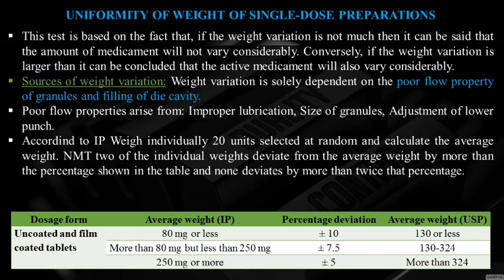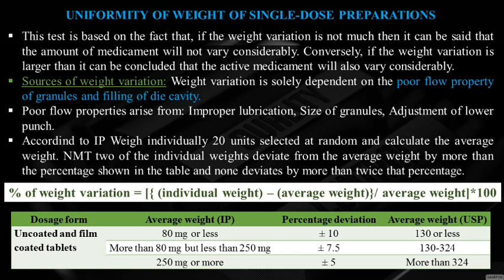According to USP: if tablet weight is less than 130 mg → ±10%; 130–324 mg → ±7.5%; more than 324 mg → ±5%. Percentage weight variation is calculated as: (individual weight − average weight) / average weight × 100.